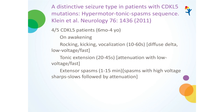The next type of paper tried to characterize the epilepsy more specifically. A paper in Neurology by Kleinodau described a distinctive seizure type in patients with CDKL5 mutations: the hypermotor tonic spasm sequence (HTSS). They saw this in 4 out of 5 of their CDKL5 patients, between 6 months and 4 years of age. Typically, but not always, it would happen on awakening — the child would have rocking, kicking, vocalization, lasting 10 to 60 seconds, with characteristic EEG features of diffuse delta, low voltage, fast.